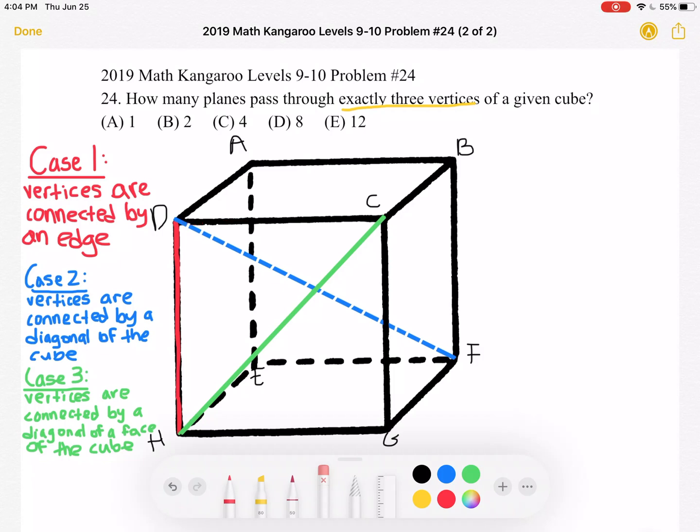So now we know that if the two vertices are connected by an edge we can't have a plane that passes through exactly three vertices, it'll always pass through four. So now let's look at case number two.